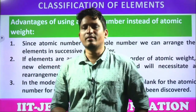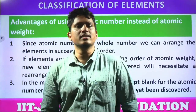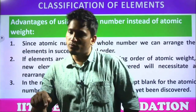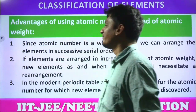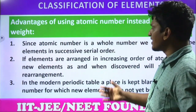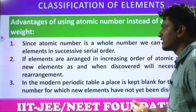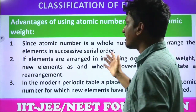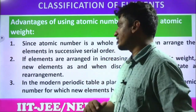Why is atomic number a whole number? Because it indicates the number of protons. Can an atom have 2.3 protons? No. So if elements are arranged in the increasing order of atomic weights, newly discovered elements would necessitate rearrangement of the entire classification.